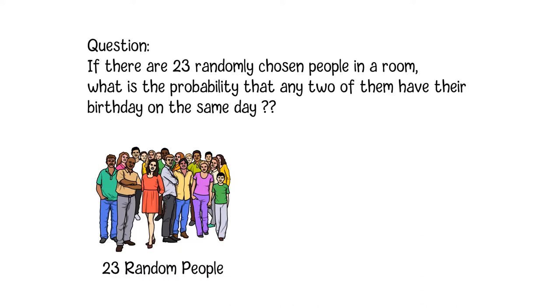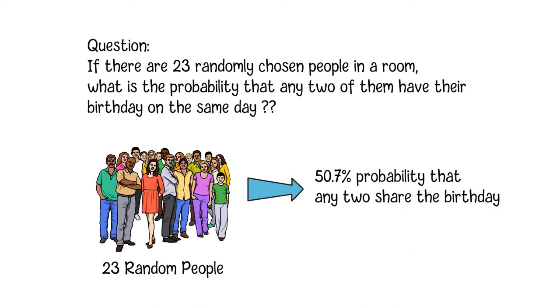You may think that number should be very low because each person's birthday might be randomly falling into any day within 365 days in a year. However, if you do a serious math calculation, you may find that the actual result is 50.7%, which might be much higher than you originally expected.